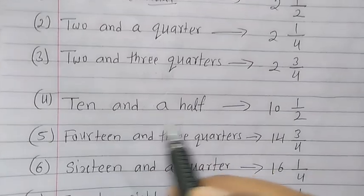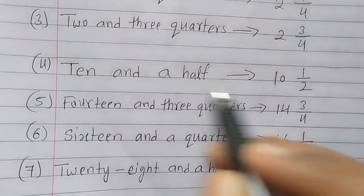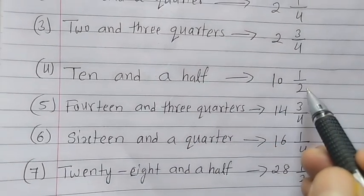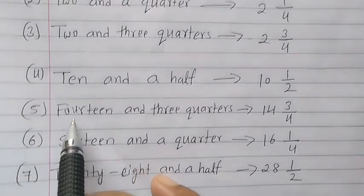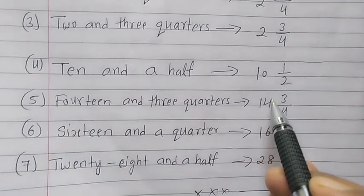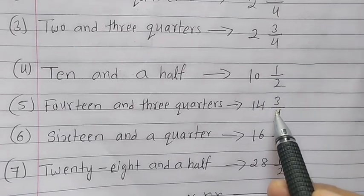Fourth one, ten and a half, so first write the 10, then write the half, 1 upon 2. Fifth question, fourteen and three quarters, so write 14, 3 upon 4.